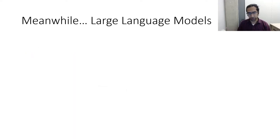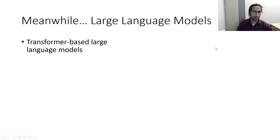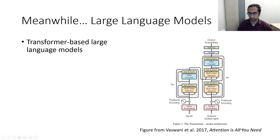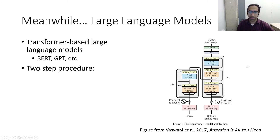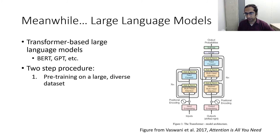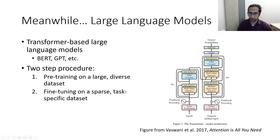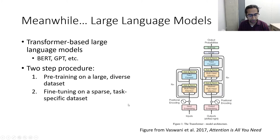Setting those drawbacks aside, let's talk about large language models and recent developments. There has been a lot of success using transformer-based large language models — you may have heard of BERT and GPT. These are typically trained in a two-step procedure: first, pre-training on a large diverse dataset such as data scraped from the internet; second, fine-tuning the model weights on a smaller, task-specific dataset. Even when pre-trained on something unrelated to your specific task, task-specific fine-tuning enables strong performance across a variety of settings, fueling much NLP success over recent years.